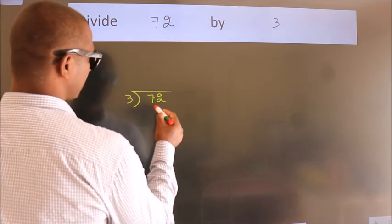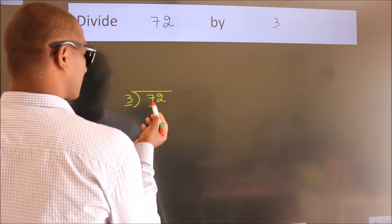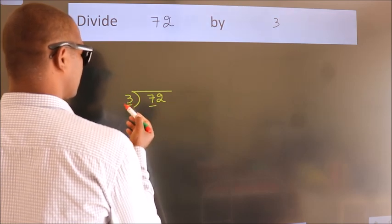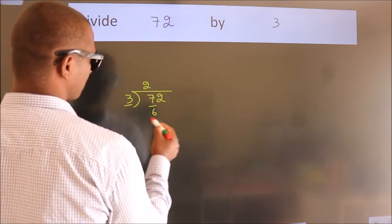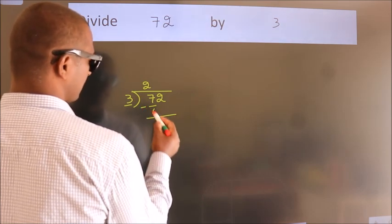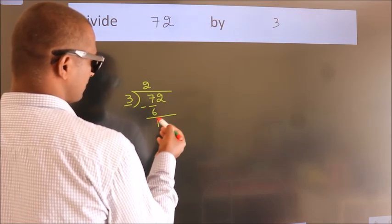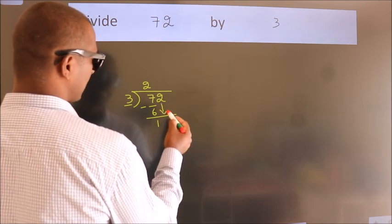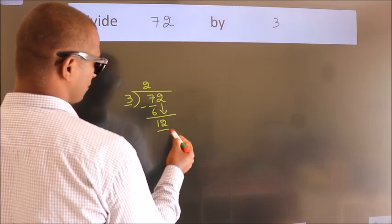Here we have 7, here 3. A number close to 7 in the 3 times table is 3 2's 6. Now we should subtract — we get 1. After this, bring down the beside number, so 2 down. So 12.